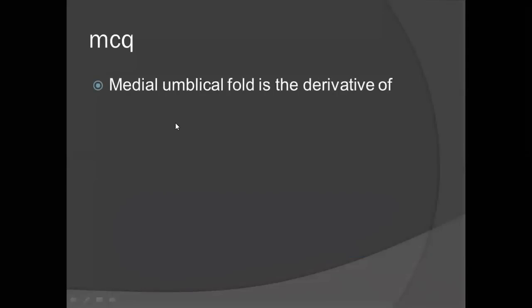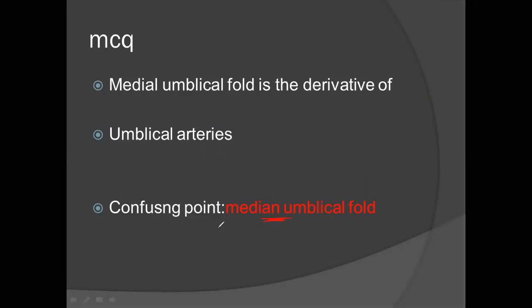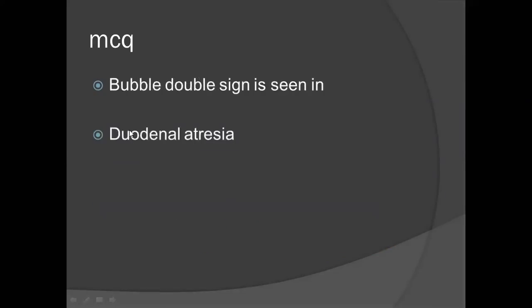The medial umbilical fold — its derivative is the umbilical artery. The median umbilical fold is a little bit different — it is a derivative of the urachus. Regarding duodenal atresia: in the statement, there is only one word you need to recognize — the 'double bubble sign,' which is the characteristic of duodenal atresia.